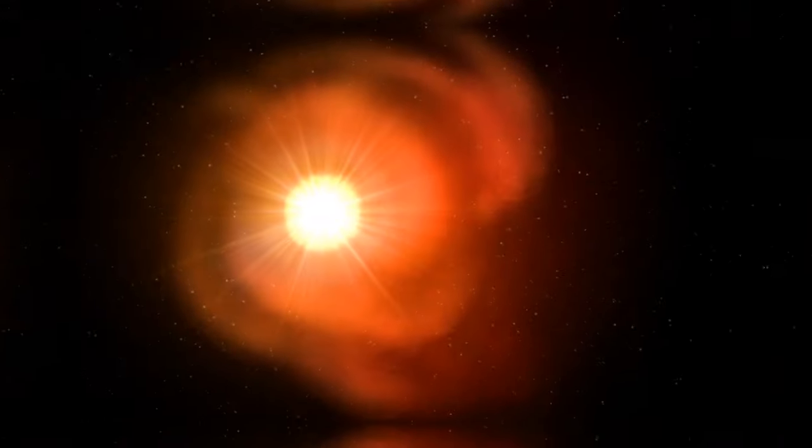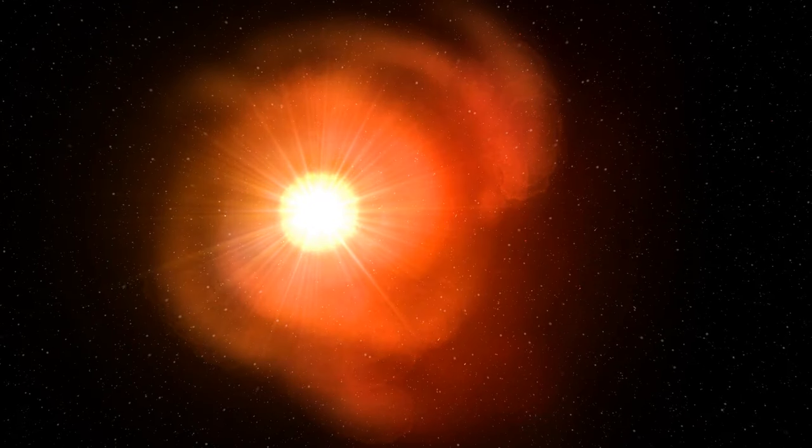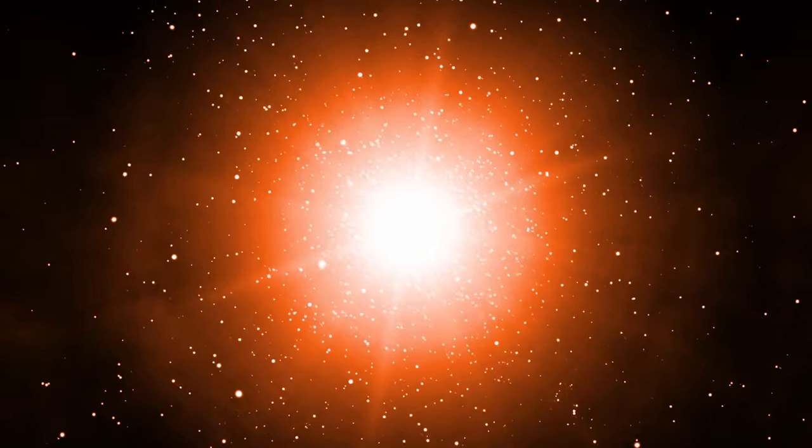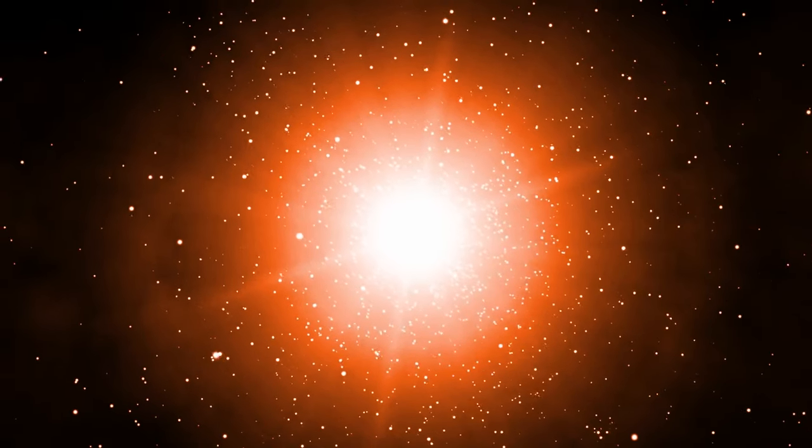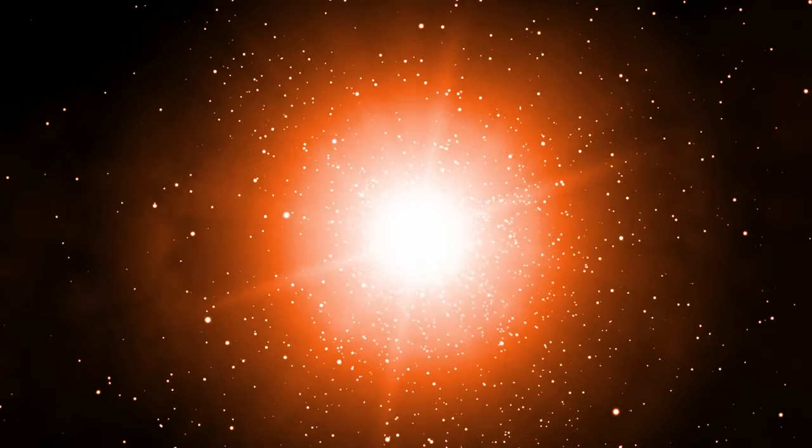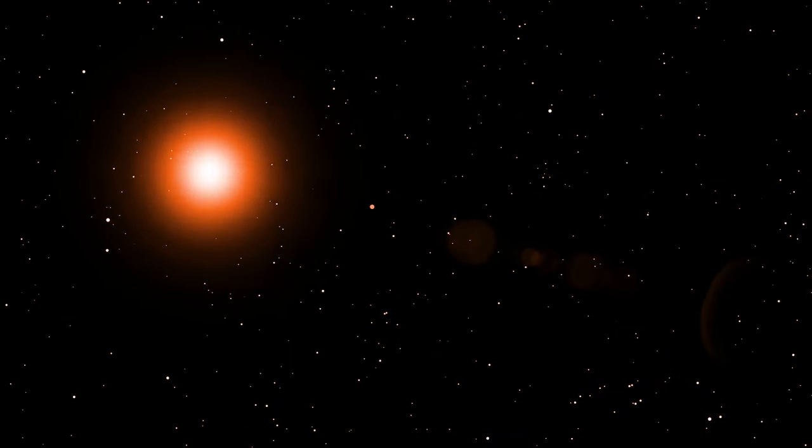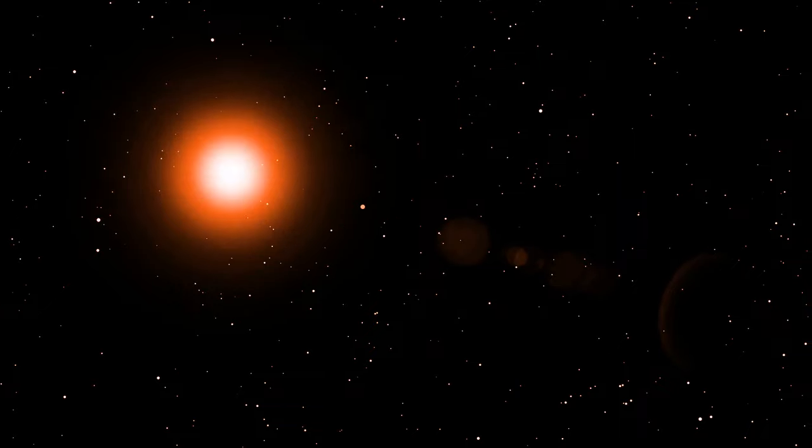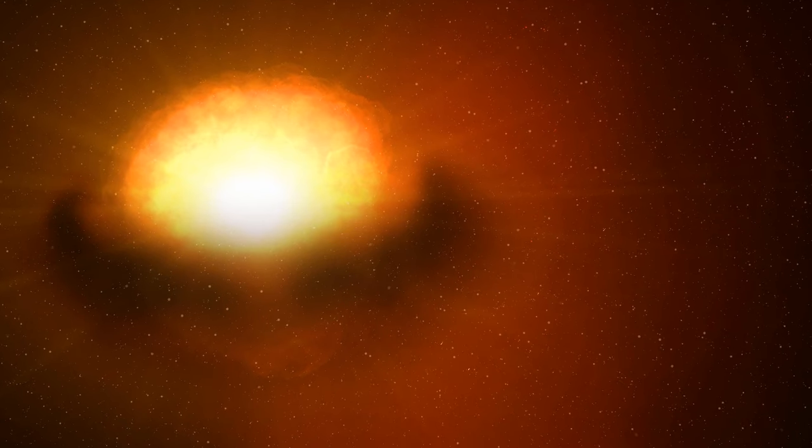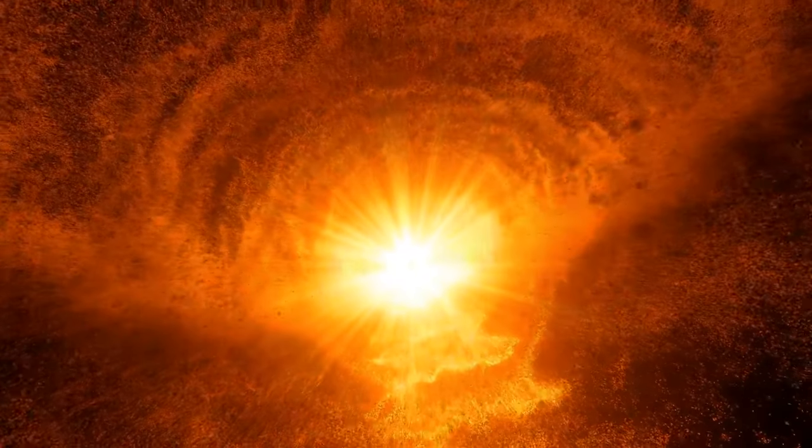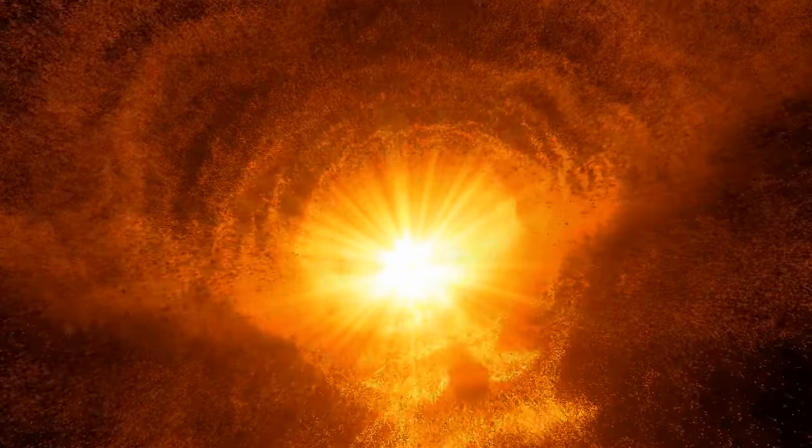It may be because Betelgeuse is classified as a semi-regular variable star, which sounds kind of redundant to me. Its approximately 400-day cycle of pulsation changes its brightness by about one full magnitude, going from much brighter than a first magnitude star to closer to a second magnitude star. But never was Betelgeuse observed to dim so rapidly or so drastically as it did recently. So what's going on with it?